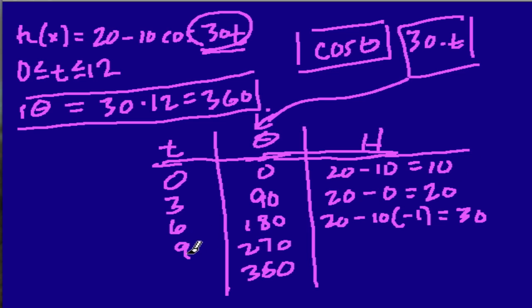Next, we have 9. 9 times 30 is 270. So what do we do there? Well, we have 20 minus 10 times the cosine of 270, which is just 0. So 20 minus 0 is 20.